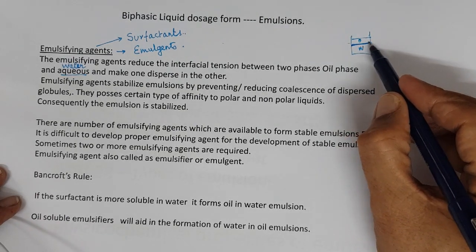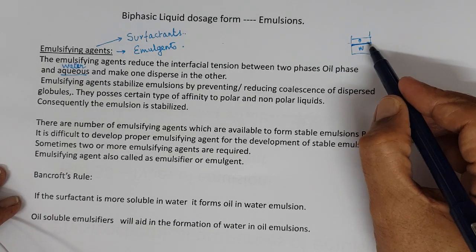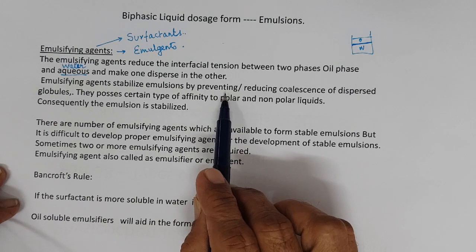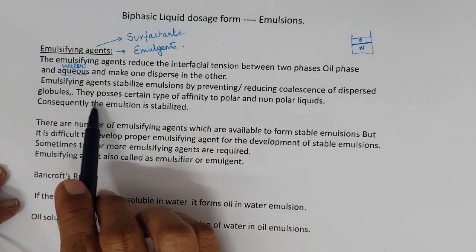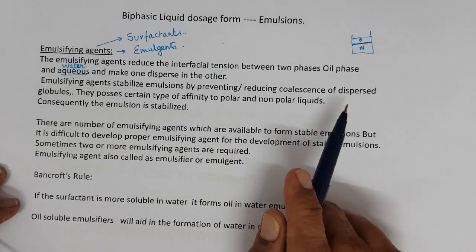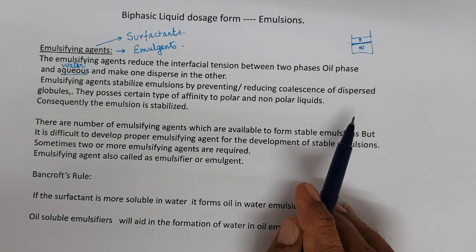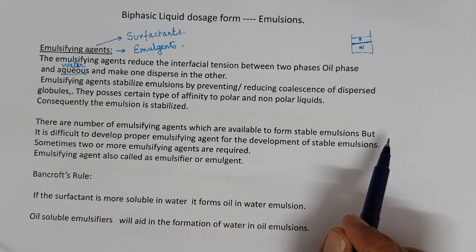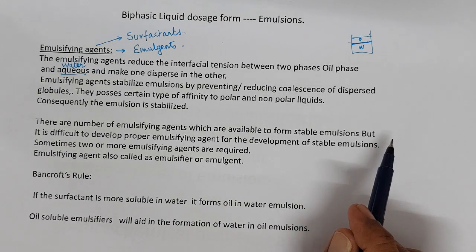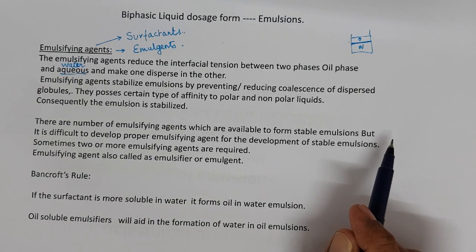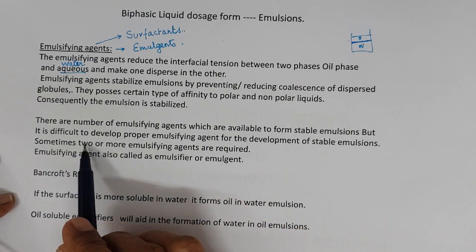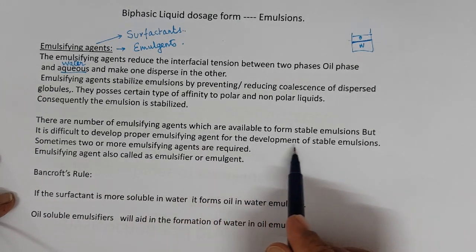The surfactant reduces the interfacial tension and makes one phase disperse into the other. Emulsifying agents stabilize emulsions by preventing and reducing coalescence of the dispersed globules. They possess certain affinity to polar and non-polar liquids. There are many emulsifying agents available to form stable emulsions, but it is difficult to develop a proper emulsifying agent for stable emulsions.